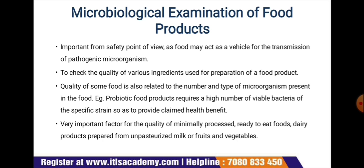Traditional methods for detecting foodborne pathogenic bacteria are often time-consuming due to the need for culture media growth, followed by isolation, biochemical and serological identification, and in some cases specific characterization. Advances in technology have made detection and identification faster, more sensitive, more specific, and more convenient than traditional assays. Rapid detection methods are particularly important in the food industry as they can detect pathogens in raw and processed foods immediately, and are sensitive enough to detect pathogens present in low numbers.